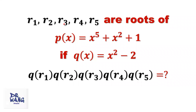R1, R2, R3, R4, and R5 are roots of p of x, which is x to the power of 5 plus x squared plus 1. If q of x equals x squared minus 2, what is the value of the product of q(R1), q(R2), q(R3), q(R4), and q(R5)?